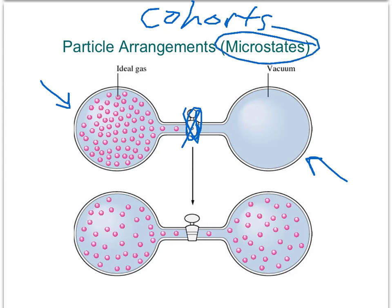This slide happens to show two different microstates. The first one, where all the particles are in the left-hand cohort or bulb, and the second one on the bottom, where the particles are about evenly distributed between the two cohorts. Instead of worrying about the particulars of every single particle, we'll be concerned with the overall microstate.